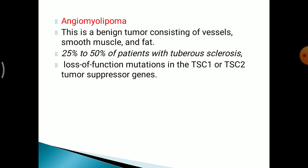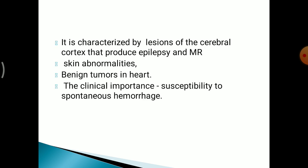The other benign tumour is angiomyolipoma, consisting of vessels, smooth muscle and fat. 25–50% of patients with tuberous sclerosis show angiomyolipoma. There is a loss of function mutation in the TSC1 or TSC2 tumour suppressor gene. It is characterised by lesions of the cerebral cortex producing epilepsy and intellectual disability, skin abnormalities and benign tumours in the heart. The clinical importance is that this tumour is susceptible to spontaneous haemorrhage and can be a surgical emergency.